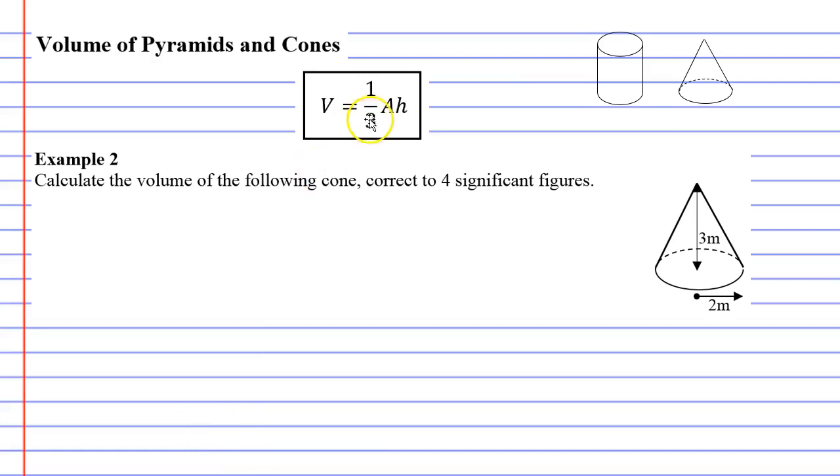It uses the same formula: one-third times area times height. The reason for that is because if we look at this cone, it fits in the cylinder a bit like a pyramid fits inside of a square-based prism.